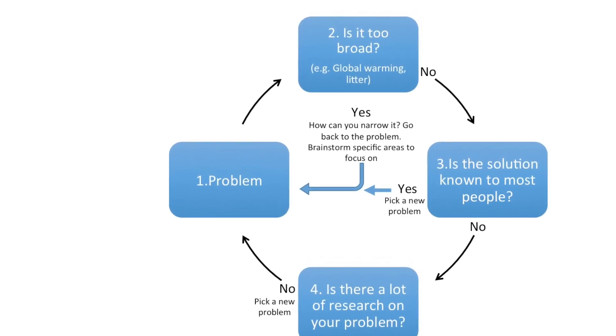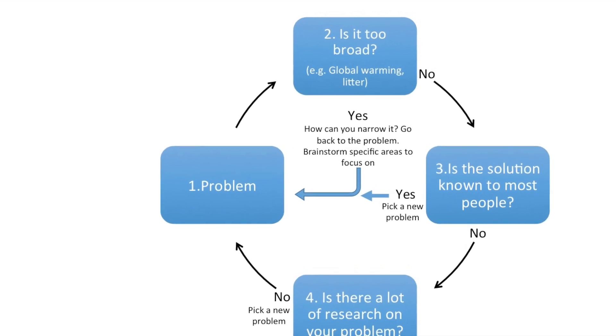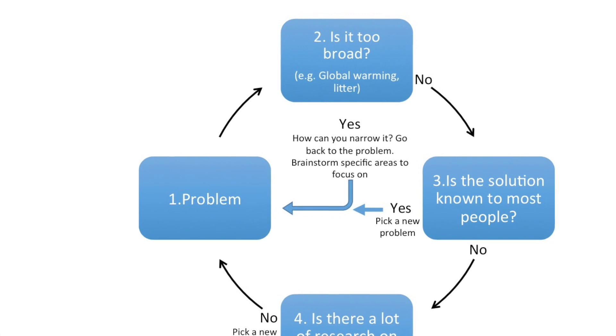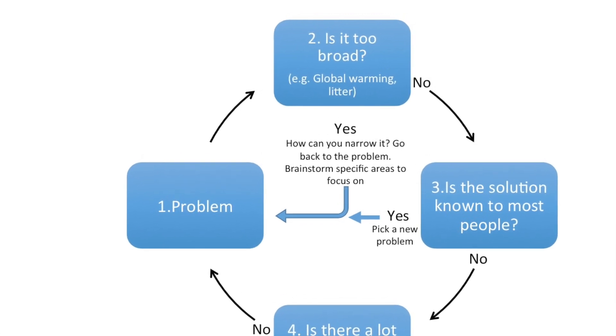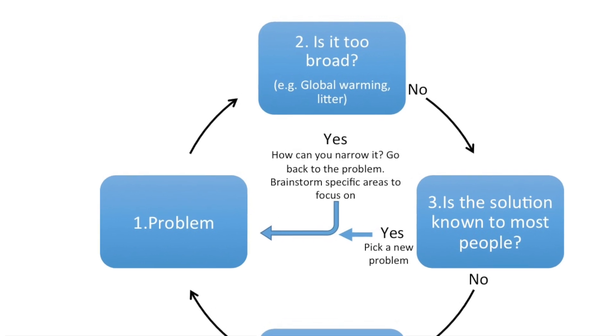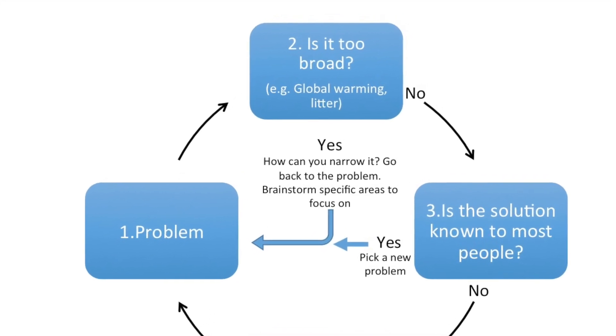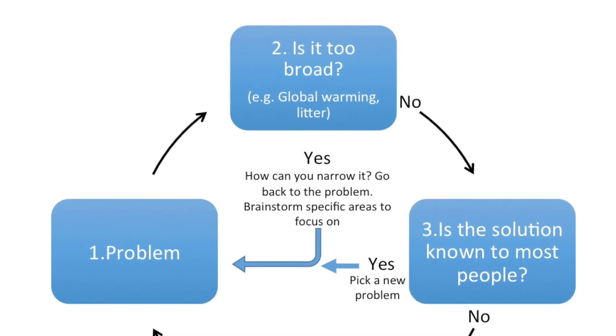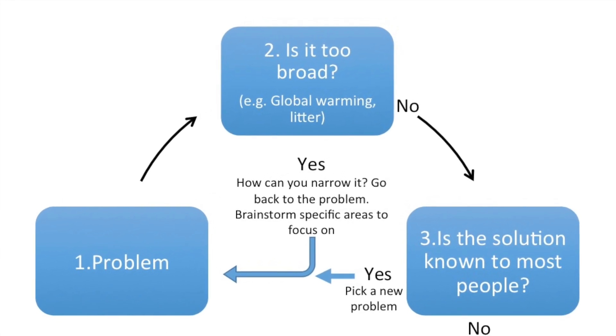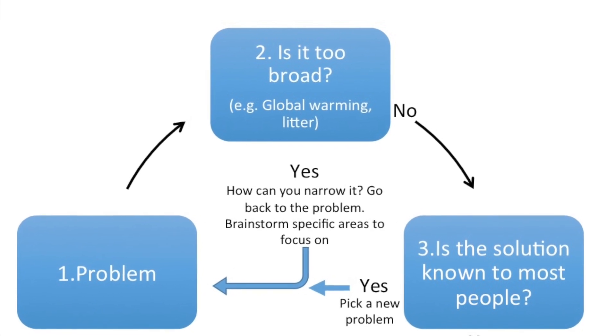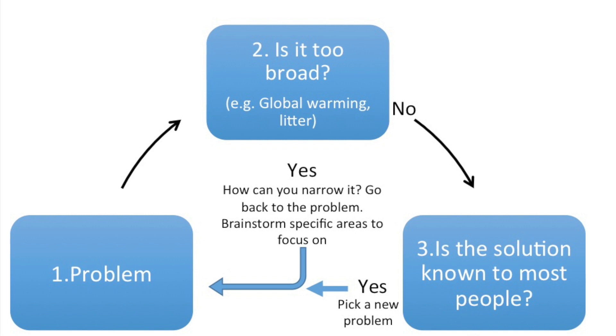For example, global warming. Then the second step is to ask yourself, is my problem too big, is it too broad? If the answer is yes, then you should brainstorm more specific problems in that area and then return to the first step. If the answer is no, you can move on to the third step.